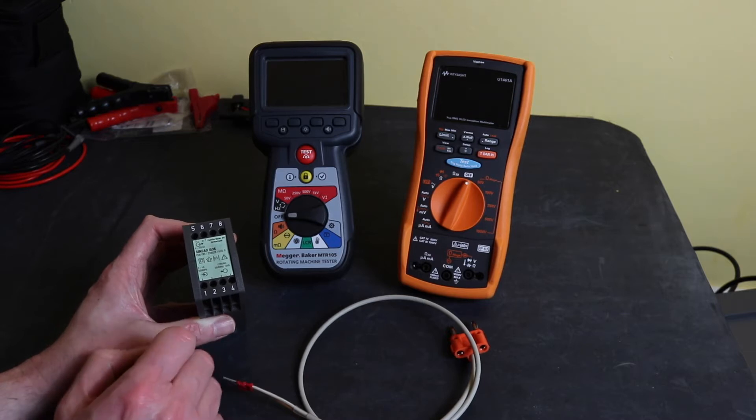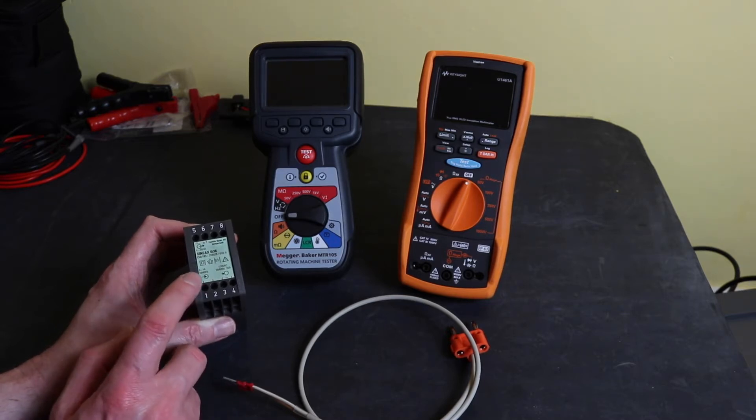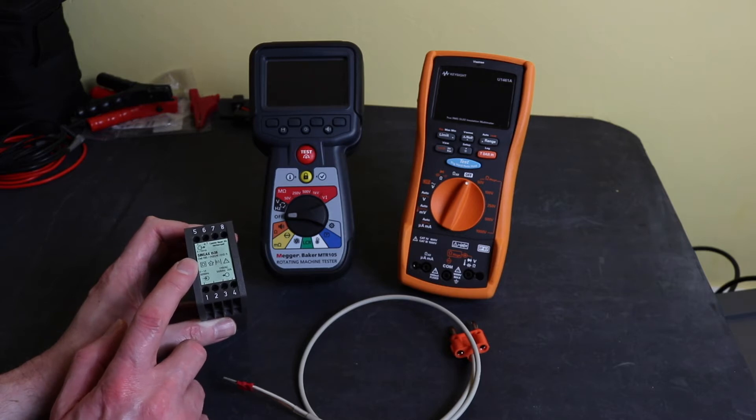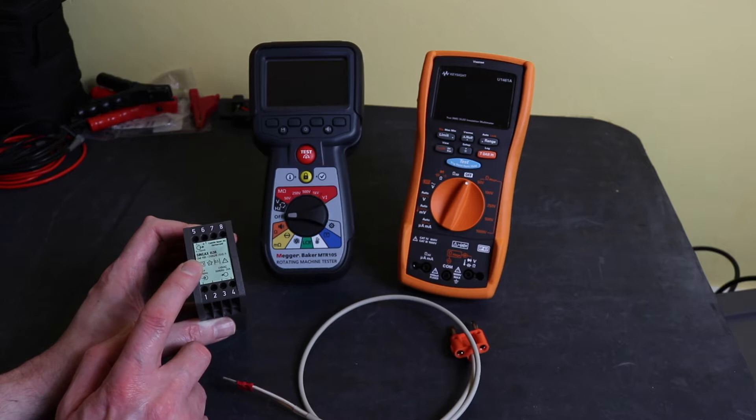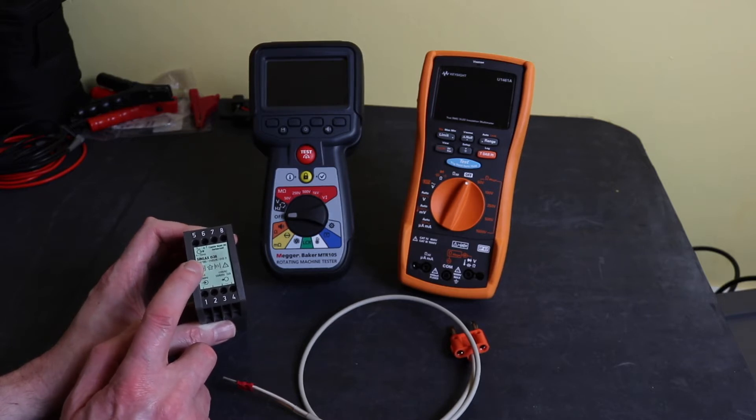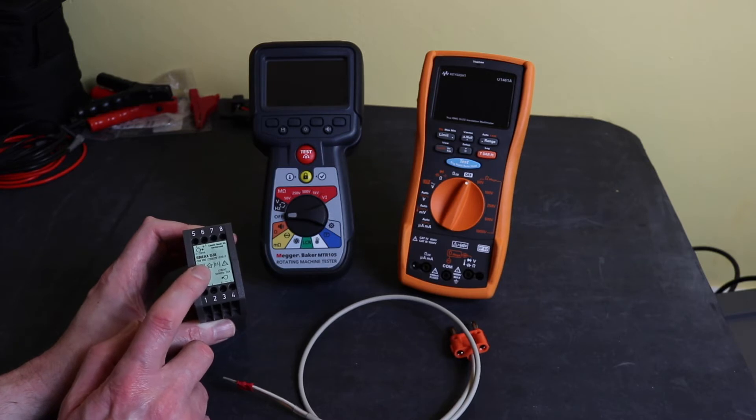And then in the control system for the settings you would reset that ratio back to the current transformer ratio. So the display on the control system would go between 0 and 2000 amps with the 0 being 4 milliamps and 2000 amps being 20 milliamps.